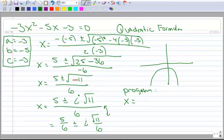our response is x equals negative 0.833 minus 0.553i, and the other solution is x equals negative 0.833 plus 0.553i. So there's the solution by using the program.